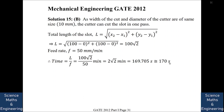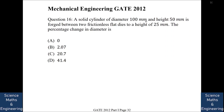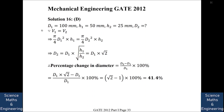A solid cylinder of diameter 100 mm and height 50 mm is forged between two frictionless flat dies to a height of 25 mm. The percentage change in diameter is found by conserving volume. The new diameter is √2·D1. The percentage change is (√2·D1 − D1)/D1 × 100 = (√2 − 1) × 100 ≈ 41.4%. The answer is D.